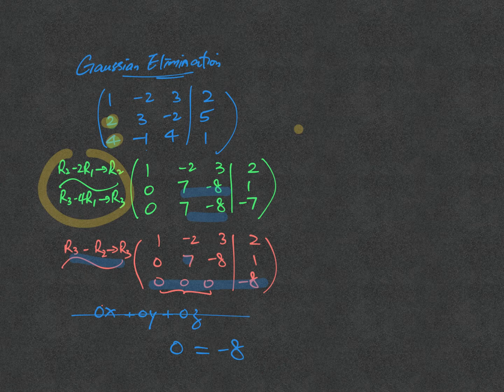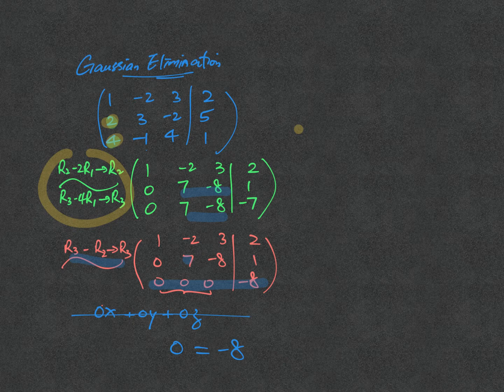It's totally a wrong answer. Unreasonable to say 0 is minus 8. So what's happening to the system, or system of equations? It has no solution.